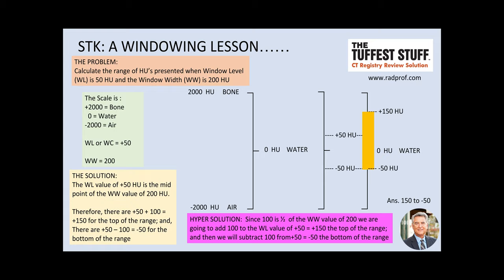So now, when we look at our problem to calculate the range of Hounsfield units presented when window level, or window center, is 50 Hounsfield units and the window width is 200 Hounsfield units, take a look at the middle portion right here.